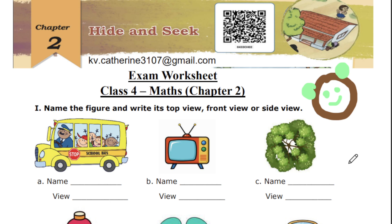Do not go anywhere alone — always be in a place where many people are around. If someone comes and talks to you in a dangerous way, do not talk with them. Go and stand near a teacher or friends. Your school seniors — fourth, eighth, or ninth standard brothers and sisters — will also be there, and you can stand near them if someone approaches you.